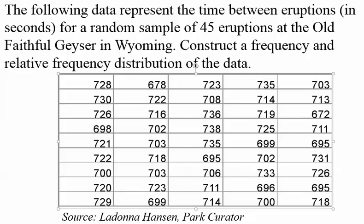In this video I'm going to show you how to create a continuous data histogram, a frequency histogram, and a relative frequency histogram using StatCrunch. The data set I'm using is the time between eruptions at the Old Faithful Geyser in Wyoming, and the source is a park curator at Yellowstone Park.